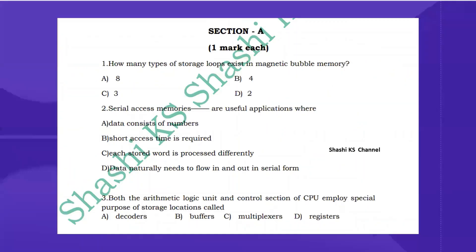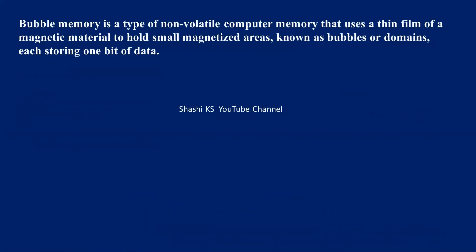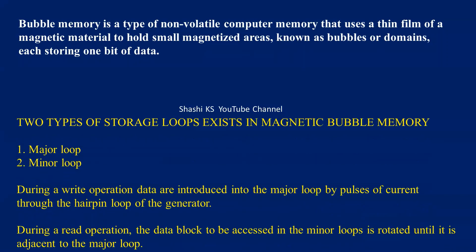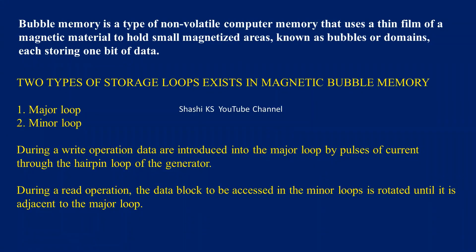First question: how many types of storage loops exist in magnetic bubble memory? Magnetic bubble memory is a non-volatile memory. There is a thin film of magnetic material; one magnetic film will hold a magnetic bubble, and the magnetic bubble will store a bit of data. There are two types of storage loops: one major loop and one minor loop. The major loop handles the data read operation. So the answer is two.